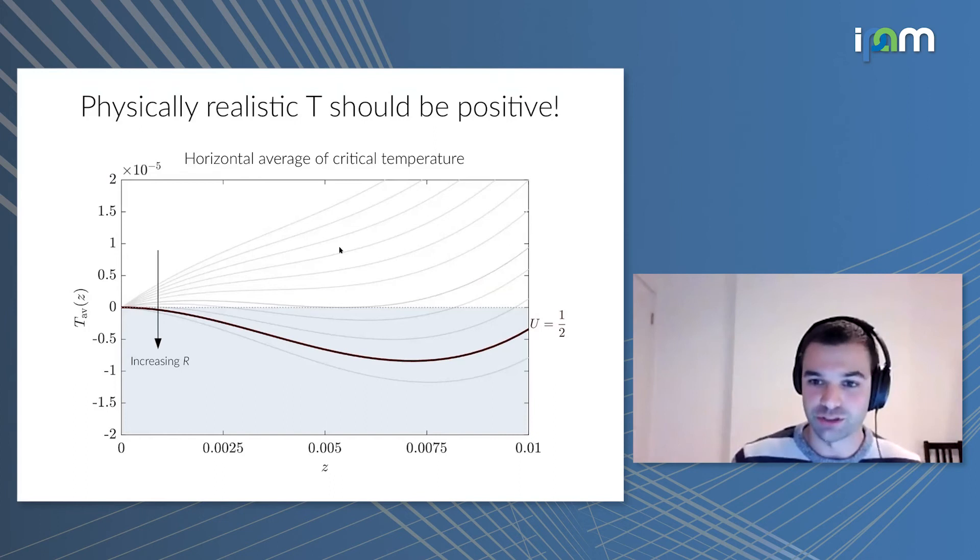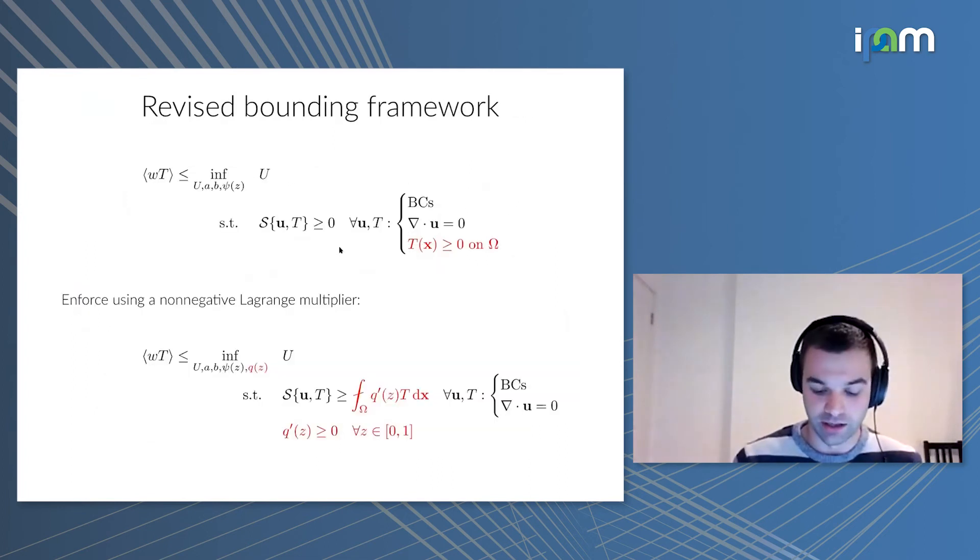This is what we tried after noticing this. We scratched our heads for a bit before we observed this—looking at the scale of the axis, it took us a while to notice. But after we noticed, we went back to our bounding framework and said, aha, we should not impose that s is positive for all temperature fields, but only for those that are positive in the domain. We can handle this type of constraint numerically and analytically using a non-negative Lagrange multiplier, which I'll call q prime of z, which should be non-negative throughout the layer. I define this multiplier as a derivative for mathematical convenience, so when I do implementation and analysis I can integrate by parts conveniently. I take it to depend on z only, not on horizontal coordinates, because the problem is translation invariant due to periodicity, so it doesn't matter what the phase is.